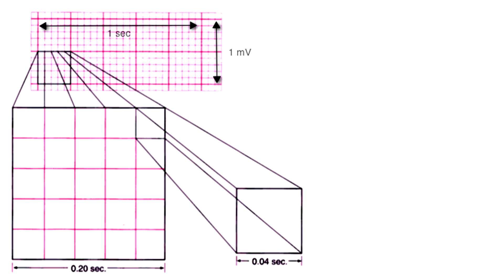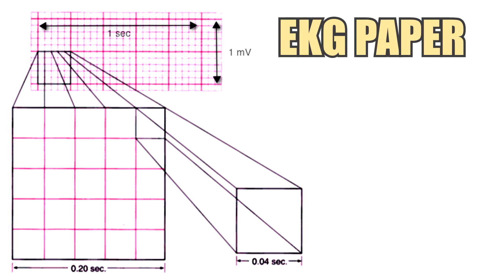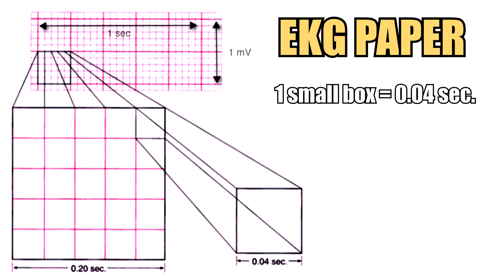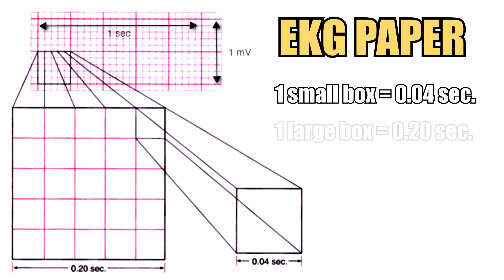The second step is to familiarize yourselves with EKG paper. It's important to memorize that the tiny small boxes are worth 0.04 seconds. And in a big box there are five of these tiny boxes, so a big box is worth 0.20 seconds.